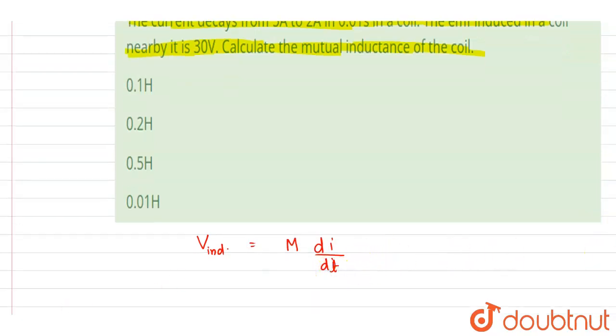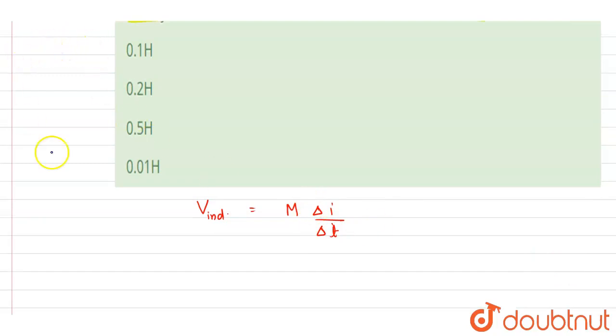So you can also write it as change in current by change in time. And what we want, we want the mutual inductance.